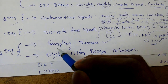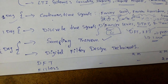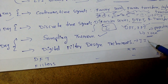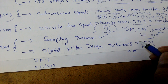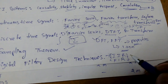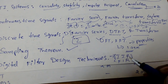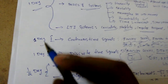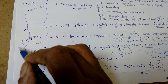Next is the sampling theorem — what it is, the Nyquist rate, and finding the time period for a given signal. Then there are digital filter design techniques: IIR filters and FIR filters. We need to understand how their transfer functions work and identify which type a given filter is. For this I need only half a day.